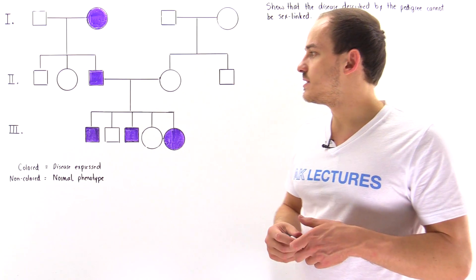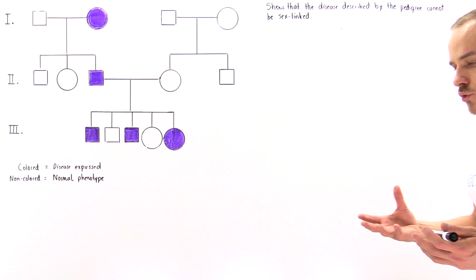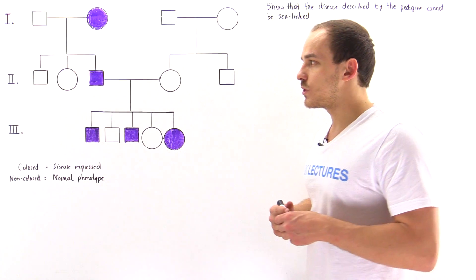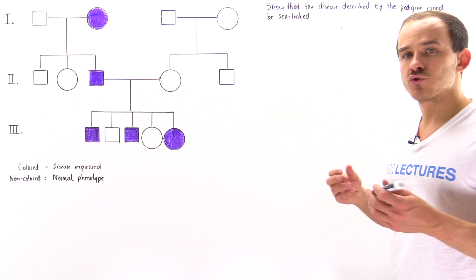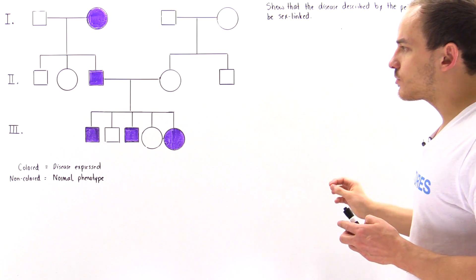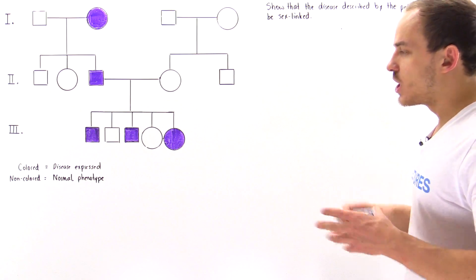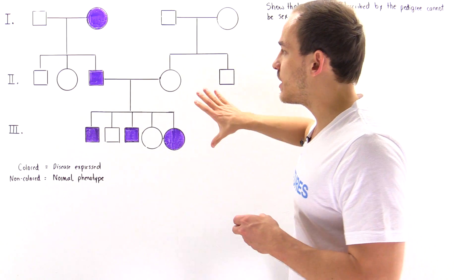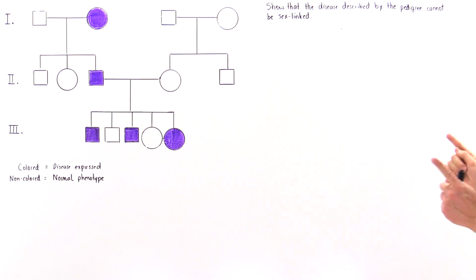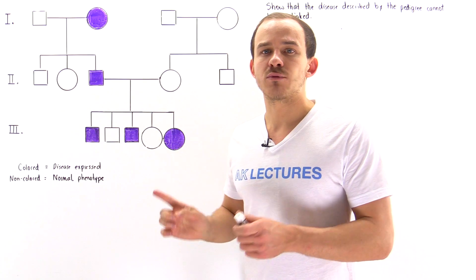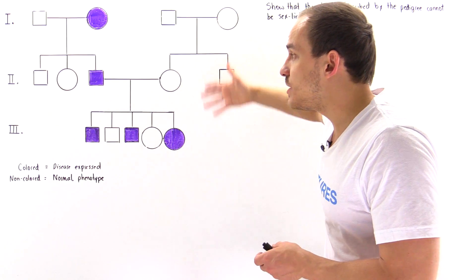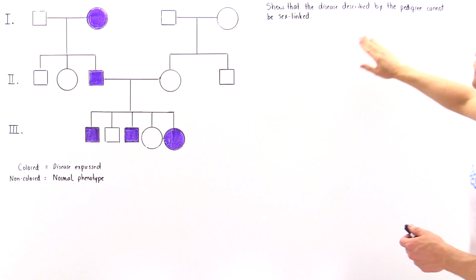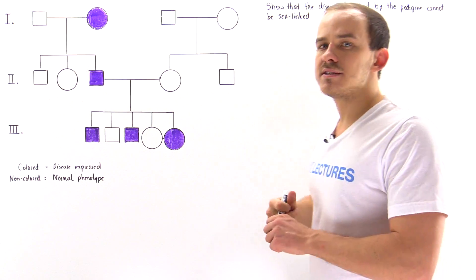Let's continue the process of analyzing pedigrees. So far we discussed pedigrees that describe diseases that are sex-linked recessive. We also looked at those pedigrees that describe autosomal recessive traits. Now let's take a look at a pedigree that describes autosomal dominant traits. We want to show that the disease described by the following pedigree cannot be sex-linked recessive and cannot be sex-linked dominant, and we want to show that it could be autosomal dominant.